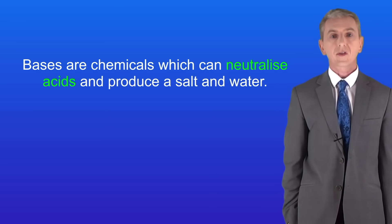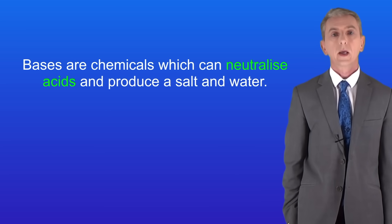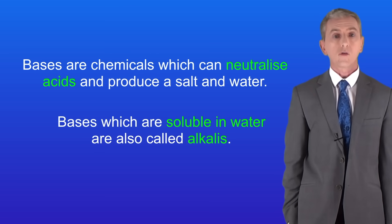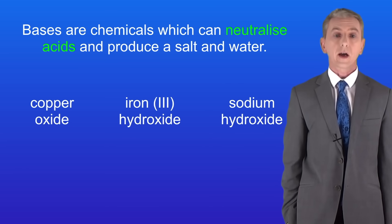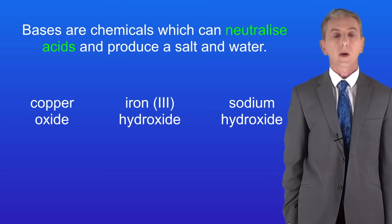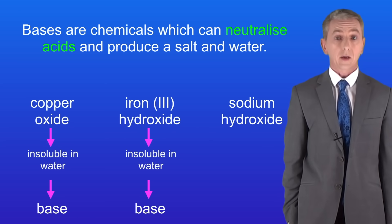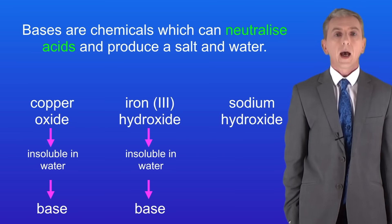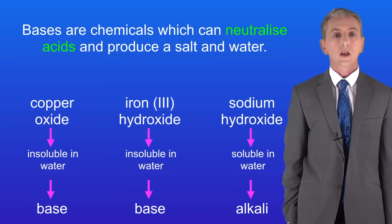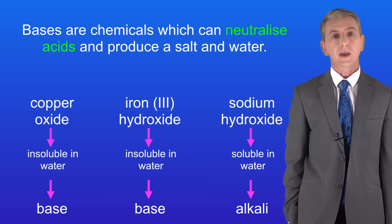In the last video we saw that bases are chemicals which can neutralize acids and produce a salt and water. Bases which are soluble in water are also called alkalis. So for example copper oxide, iron-3-hydroxide and sodium hydroxide are all bases. Because copper oxide and iron-3-hydroxide cannot dissolve in water — in other words they're insoluble — these are bases only. However sodium hydroxide can be dissolved in water, in other words it's soluble. This means that sodium hydroxide can be an alkali as well as a base.